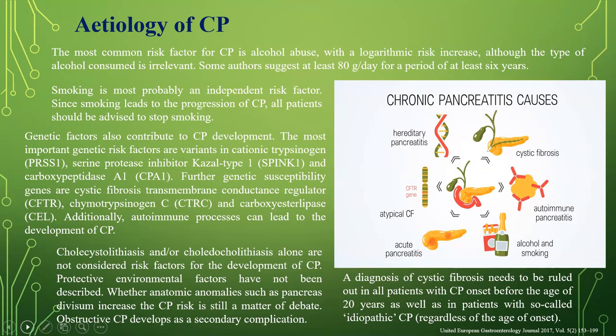Cholecystolithiasis or choledocholithiasis alone are not considered risk factors for chronic pancreatitis. Protective environmental factors have not been described, and whether an anatomic abnormality such as pancreas divisum increases the risk is still a matter of debate. Obstructive etiology is present as a secondary complication rather than a primary one. A diagnosis of cystic fibrosis needs to be ruled out in all patients with chronic pancreatitis onset before age 20, as well as in patients with idiopathic chronic pancreatitis regardless of age of onset.